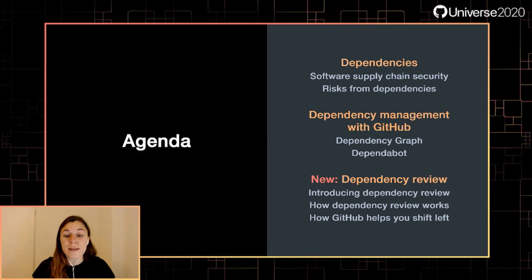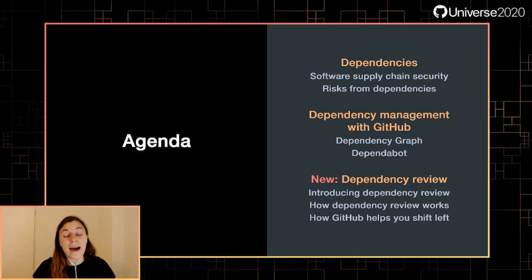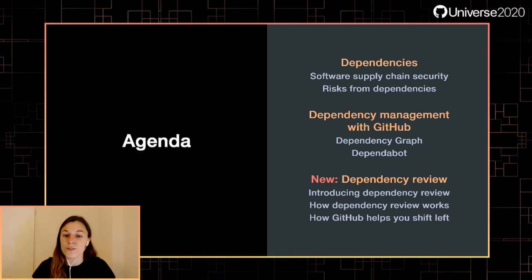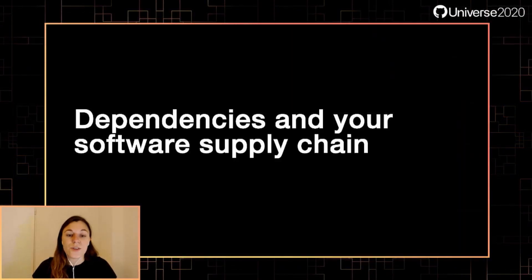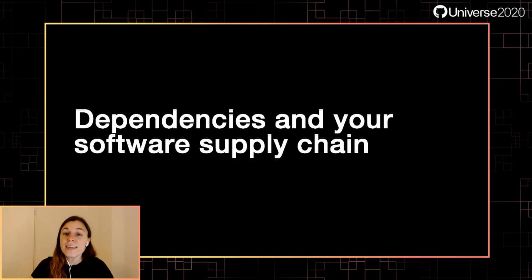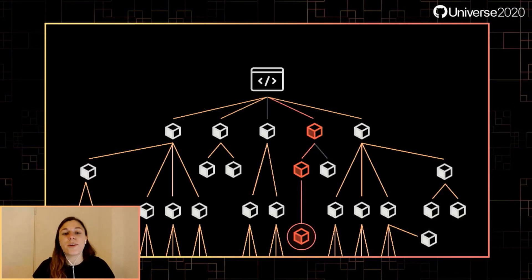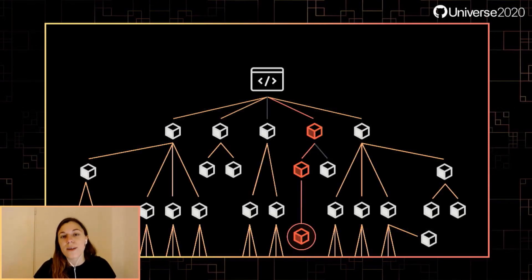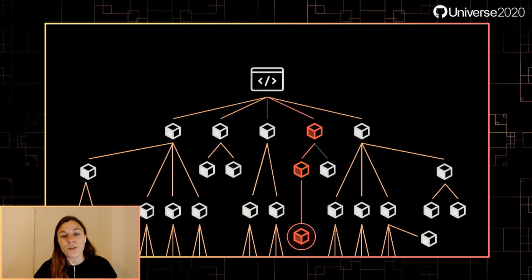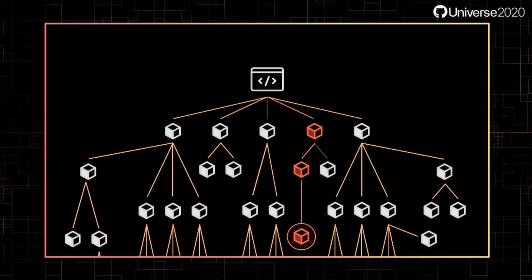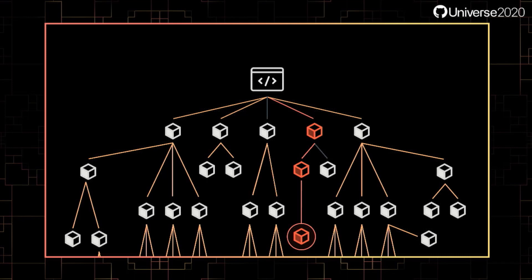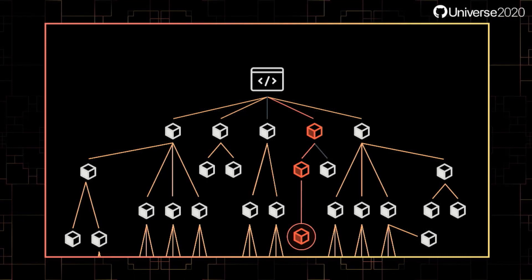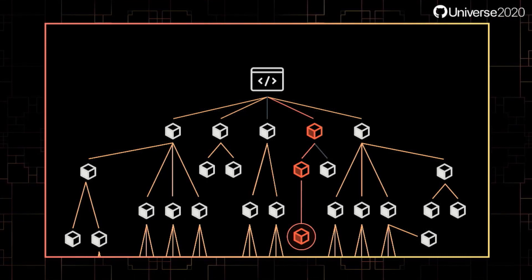We'll cover what Dependency Review is, how it works, and how it can help you shift left. So let's get started. If you're unfamiliar with the term software supply chain, it's used to refer to everything that goes into your software and where it comes from. And what is that? It's dependencies.